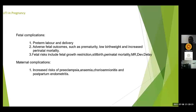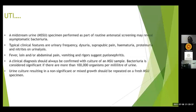Fetal complications include preterm labor and delivery, adverse fetal outcomes including low birth weight, increased perinatal mortality, fetal growth restriction, stillbirth, and mental retardation and developmental delay later in life. Maternal complications include preeclampsia, anemia, chorioamnionitis from ascending infection, and postpartum endometritis after delivery. Bacteriuria is considered significant if there are more than 100,000 organisms per milliliter of urine. Urine culture results that are non-significant or mixed growth should be repeated on a fresh sample. Diagnosis is confirmed by midstream urine culture; clinically, dipstick analysis showing nitrites is helpful.